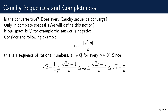Dividing by n, the sequence a_n is sandwiched between (√2 − 1/n) and (√2 + 1/n). By the limit arithmetic theorem, 1/n tends to 0 as n tends to infinity, so by the squeeze theorem this sequence converges to √2. The sequence converges to √2 if we are discussing this over the reals, but the thing is that √2 is not a rational number.